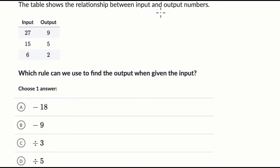The table shows the relationship between input and output numbers. So they're saying that when I put 27 in, I guess you could say to this table, or we're going to be doing something with it. So this is a number we're going to do something with. And after we do that something, we output nine.